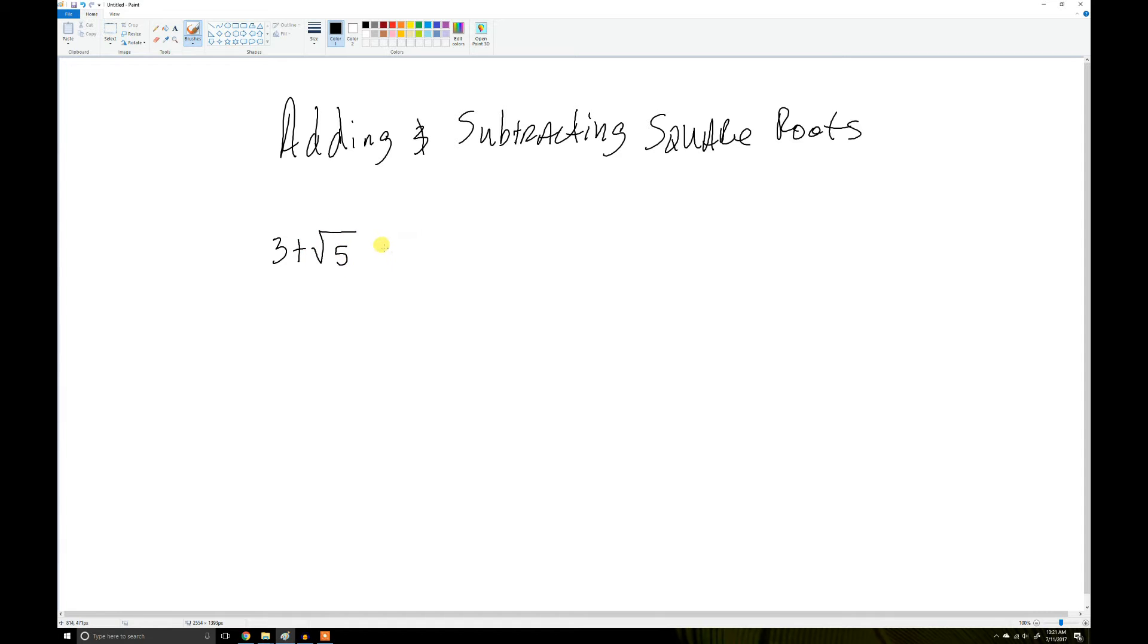For example, these two expressions right here cannot be added because this right here is the number times itself that equals 5, it's not 5, and this is 3. Nobody ever confuses how you can't add these two up because people see a 5 and think, oh well that must be 8. Well that's true, this does equal 8, but this right here doesn't equal 8. It doesn't equal the square root of 8 either. So the rule of thumb is, if you have a rational number and you want to add it to an irrational number, you can't. That's the closest you can get, that's as good as you can do.